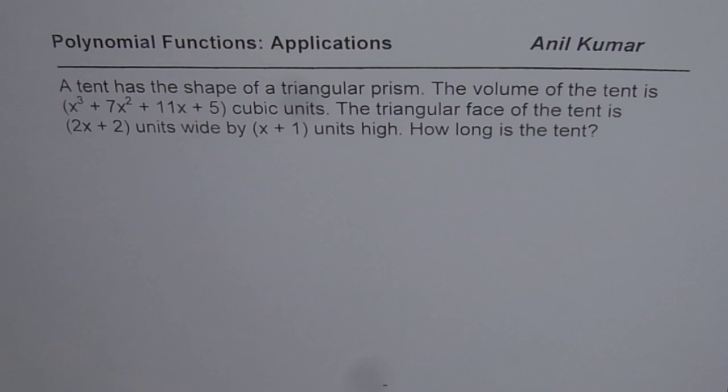A tent has the shape of a triangular prism. The volume of the tent is x cubed plus 7x squared plus 11x plus 5 cubic units. The triangular face of the tent is 2x plus 2 units wide and x plus 1 units high. How long is the tent?